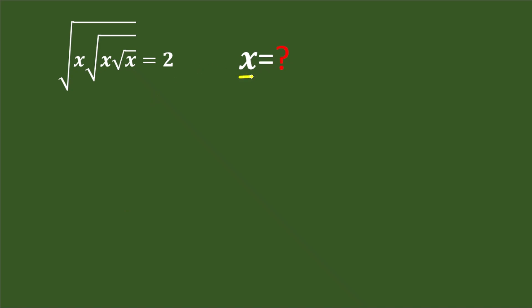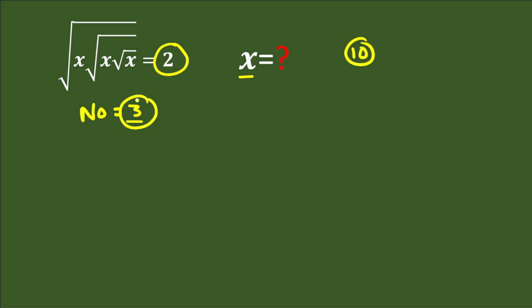Can you calculate the value of x in 10 seconds? For this type of problem, we count the number of square roots. The square root count here is 3 — that is 1, 2, and 3 — so this number will be the power. The base will be the square root, which is 1 over 2, so we take 2 as the base and 3 as the power.